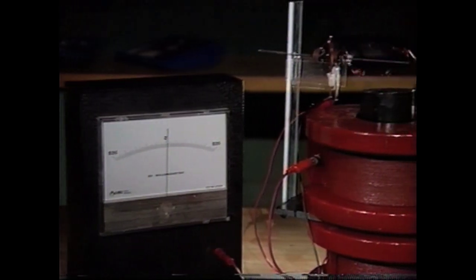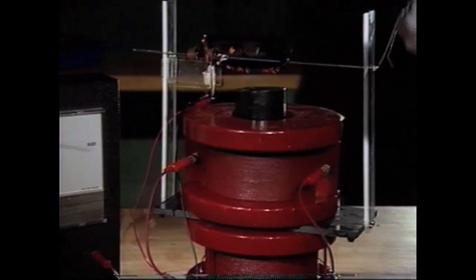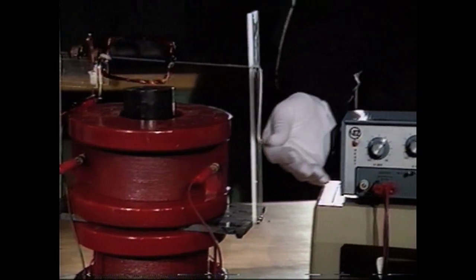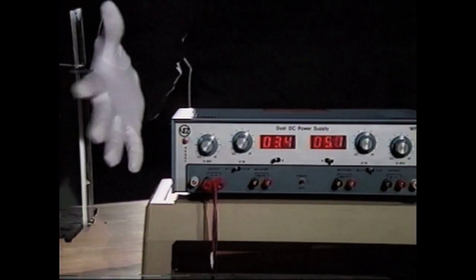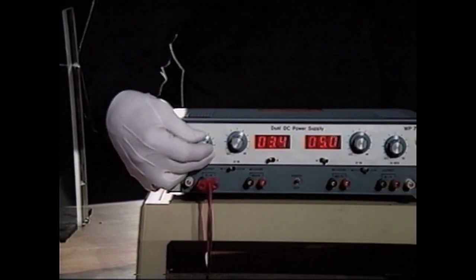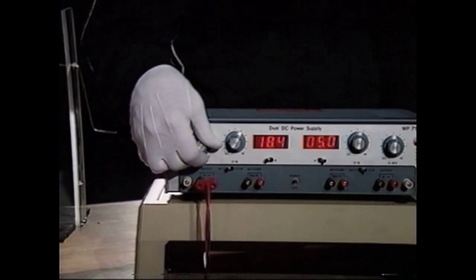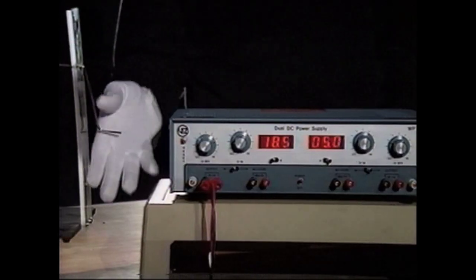We'll substitute an electromagnet for the permanent magnet so we can change the strength of the field. If we increase the current that produces the magnetism, the field becomes stronger.